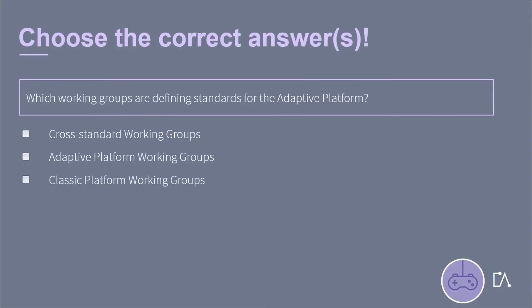Which Working Groups are defining standards for the Adaptive Platform? Cross-Standard Working Groups, Adaptive Platform Working Groups, or Classic Platform Working Groups?